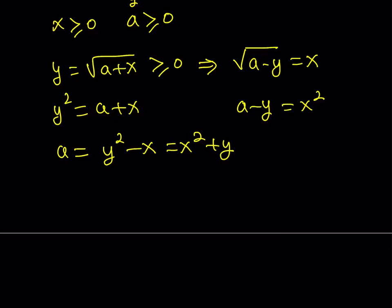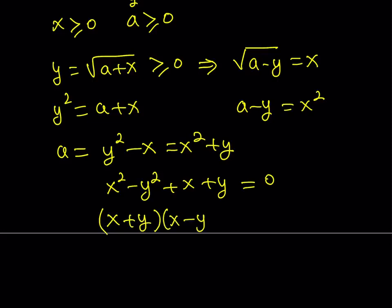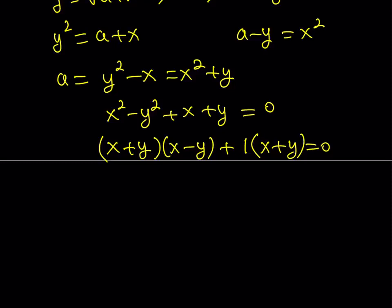So we get a nicer expression — because if you put everything on the same side, this should be factorable. Let's go ahead and do that. Putting everything on the right-hand side: x squared minus y squared plus x plus y is equal to 0. Now, x squared minus y squared is a difference of two squares, so we can factor that as x plus y times x minus y, plus 1 times x plus y. And then we can take out x plus y, getting x minus y plus 1 as another factor.